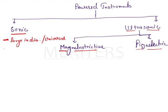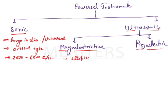The tip of the sonic instrument has an orbital type of vibrating action. Sonic and ultrasonic instruments work on vibration — here it will be orbital type. The vibration range for sonic instruments is around 2000 to 6500 cycles per second. Coming to the ultrasonic instruments, we have two types. For the magnetostrictive instrument, the pattern of vibration of the tip is elliptical.